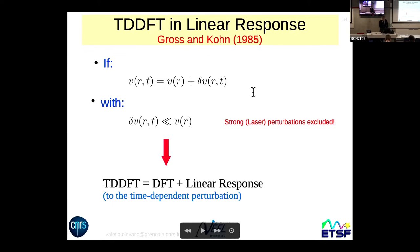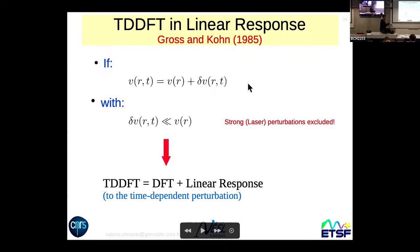TDDFT can be formulated in linear response, and this is the good news brought by the second fundamental paper, the Gross and Kohn paper of 1985. The basis of linear response TDDFT is that if the time-dependent external potential can be split in two parts: one static term representing the static ionic potential of the system, plus a perturbation — which can represent, for example, an electromagnetic field — and only the perturbation is time-dependent. The hypothesis of linear response is that the time-dependent part is much smaller than the static part.